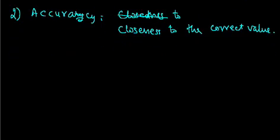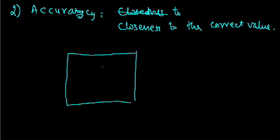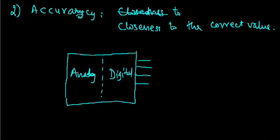A to D converter basically contains mainly two sections. Suppose if we draw the box once again, then it will have two sections: usually analog section and digital section. Digital section will not cause problems as far as accuracy is concerned, but analog section will have some problems like offset voltage or effect of bias current. Various analog circuits will be there, usually we will use op amps. Op amps have some imperfections in them.